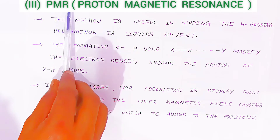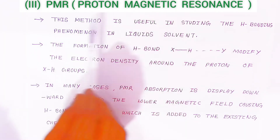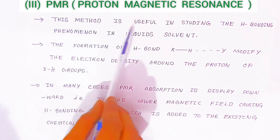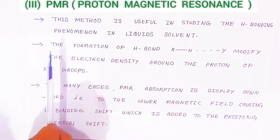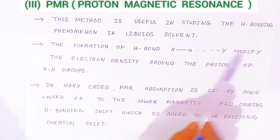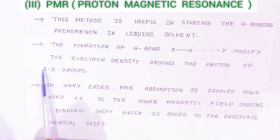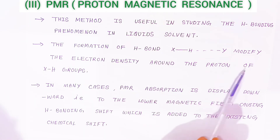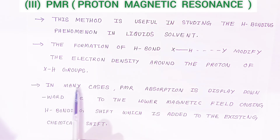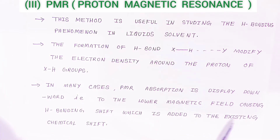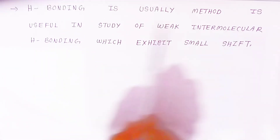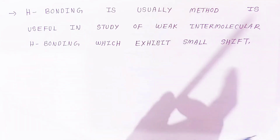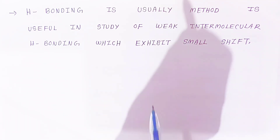One more instrument is proton magnetic resonance (PMR). PMR is useful for studying hydrogen bonding phenomena in liquids and solvents. The formation of a hydrogen bond modifies the electron density around the proton of the X-H group. In many cases, the PMR absorption is displaced downfield — to lower magnetic field — due to hydrogen bonding, which is added to the existing chemical shift. This method is especially useful for detecting weak intermolecular hydrogen bonding, which exhibits a small chemical shift.